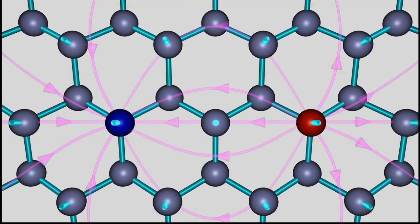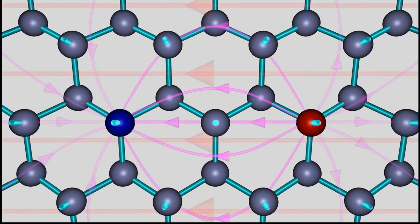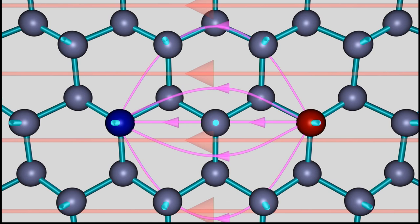Now we will discover the processes running at the reverse polarity. The negative terminal is connected to the P-type region and the positive terminal is connected to the N-type region. Now the electric field between the two ions is enforced by the field of the voltage source. The diffusion or drift of movable charges between the two regions is inhibited by both fields. Electrons are pulled back to the N-type region, holes to the P-type region.